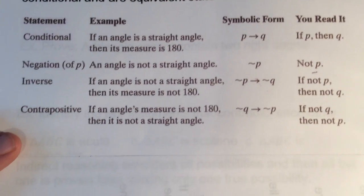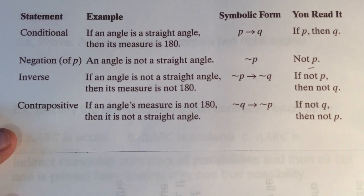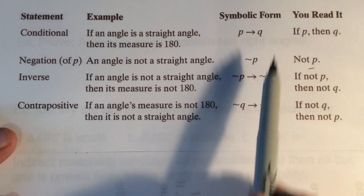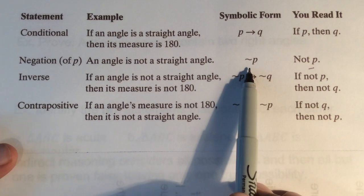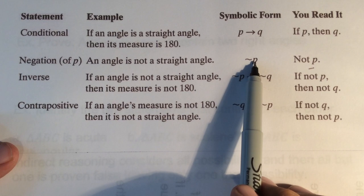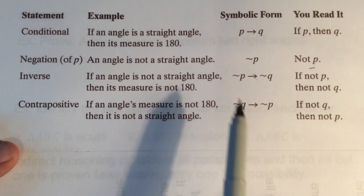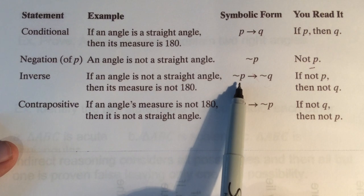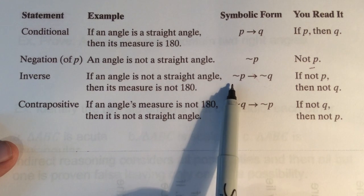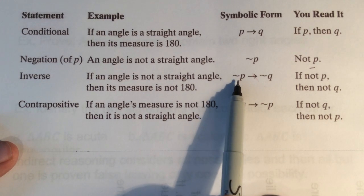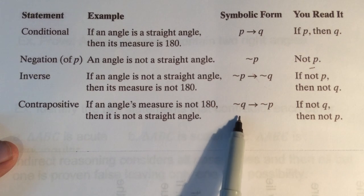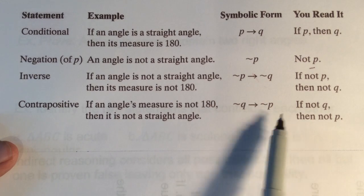In symbolic notation, the conditional is p arrow q, meaning 'if p then q.' Negation is symbolized by a tilde. So the inverse is 'not p then not q,' and the contrapositive is 'not q then not p.'